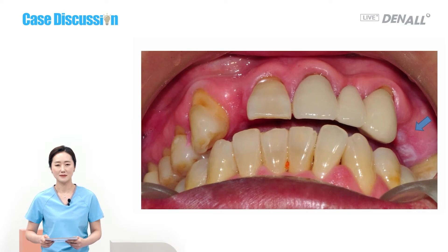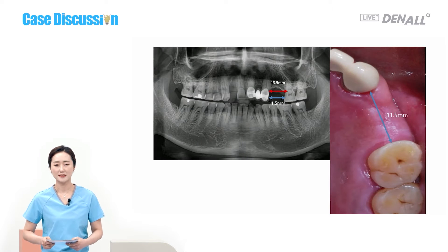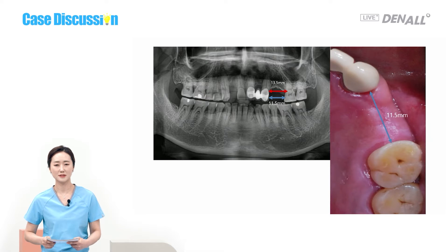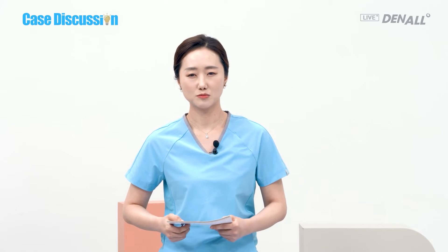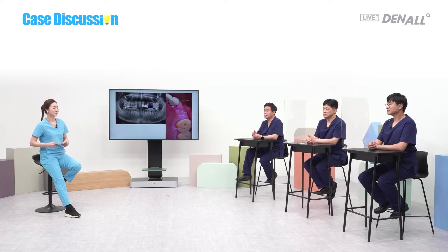If you look at the pictures, the distance in the cervical area is 13.5 mm and in the coronal area 11.5 mm. When two premolars are missing, the mesiodistal distance is typically 14–15 mm, but the space here is pretty tight. What do you think of this case?